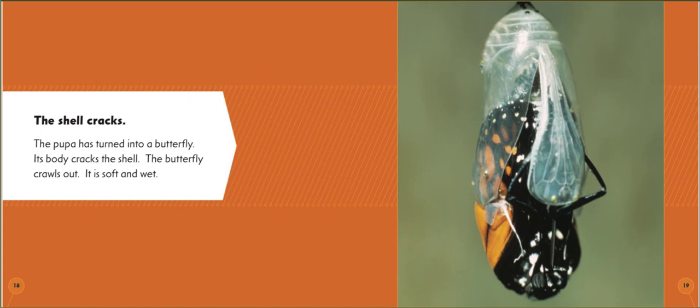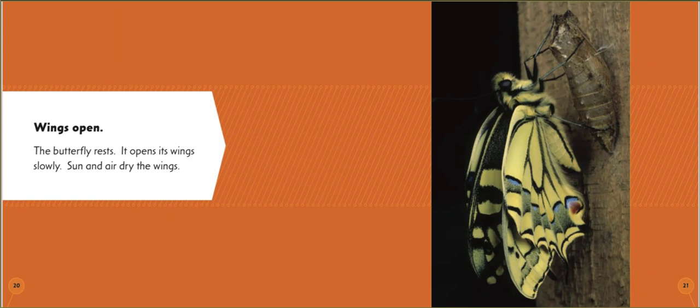Its body cracks the shell. The butterfly crawls out. It is soft and wet. Wings open. The butterfly rests. It opens its wings slowly. Sun and air dry the wings.